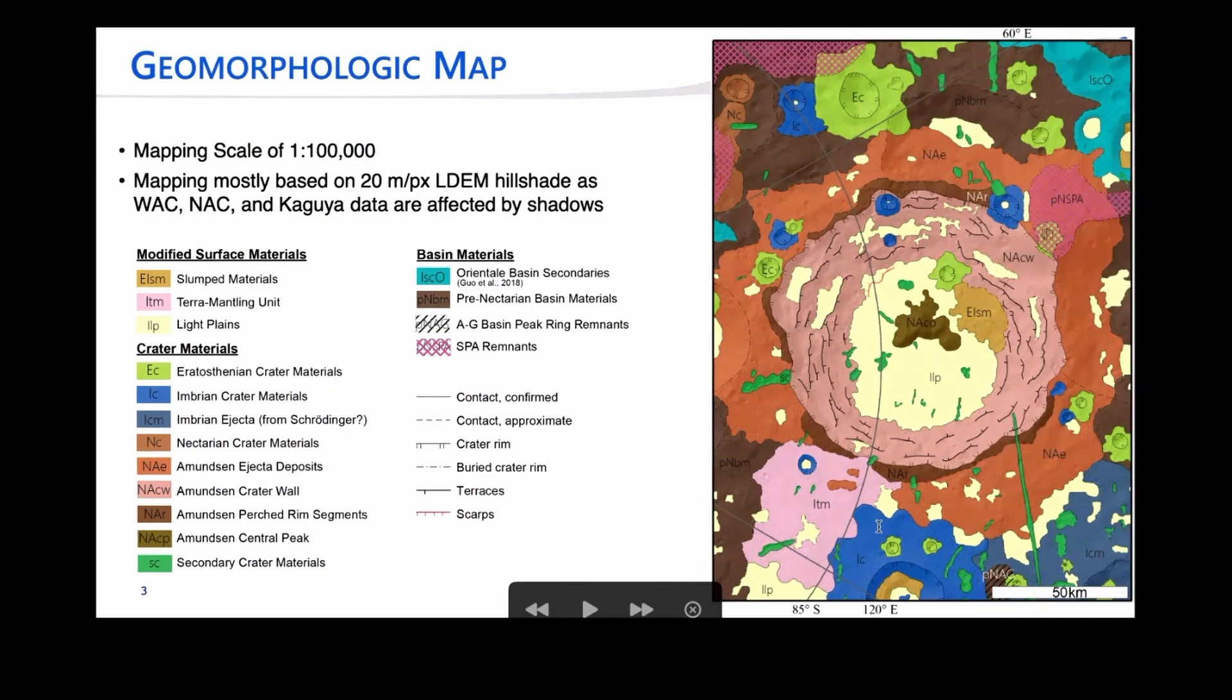I'm going to give you the map right here at the front, and then we're going to step through the different units. This is a map that's stepping off of the Krasilnikov et al map that's 1 to 300,000 in scale. We're doing this map at 1 to 100,000 in scale to start zooming in. This is the importance of having multiple different scales, like Laz and Jim were talking about. This is using the same 20 meter per pixel LDAM hillshade, and because the image data for this region have a lot of shadowing, we're switching back and forth between the image data, but the map is actually completely done on the hillshade.